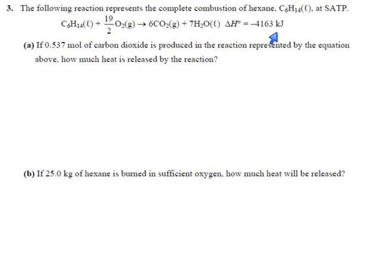Hexane is a light oil that you could burn as fuel. The problem says if you get 0.537 moles of carbon dioxide, how much heat did you make? If you burn enough of this stuff to make six moles of carbon dioxide, you get this much energy. What if you only burn 0.537 moles?